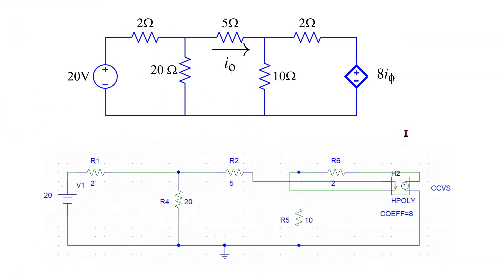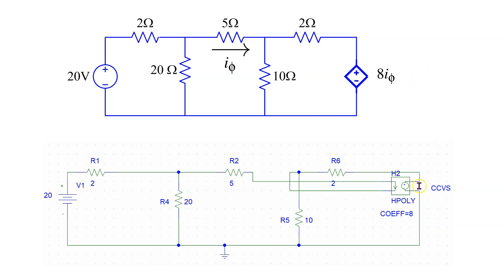Consider the first example shown here. In this circuit this is the dependent source. We can see that there is a plus minus inside the symbol, so this means that this is a dependent voltage source and the magnitude is in terms of a circuit current. Hence this dependent source is a current controlled voltage source. This picture shows how the circuit is wired up in PSPICE, and the current controlled voltage source is part name H.